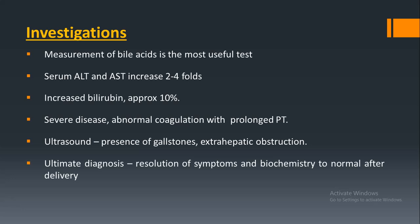To investigate obstetric cholestasis, the measurement of bile acids is the most useful test. Liver aminotransferases — ALT and AST — increase 2 to 4-fold. Bilirubin is not definitively raised; only approximately 10% of cases show increased bilirubin in severe disease. In severe disease there is also abnormal coagulation with a prolonged prothrombin time. Ultrasound is performed to exclude other causes of cholestasis, such as the presence of gallstones and extra-hepatic obstruction.